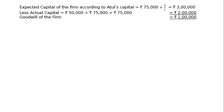This is goodwill. Now, Atul's share of goodwill: the goodwill of the firm is Rs. 1,00,000. Hence, Atul's share is 1/4, that is equal to Rs. 25,000.